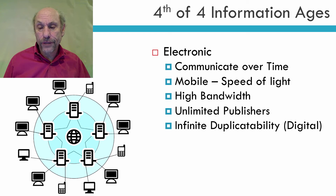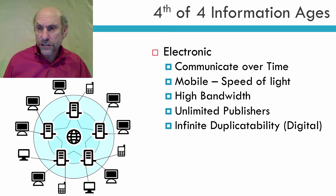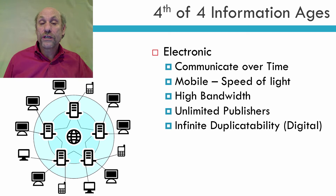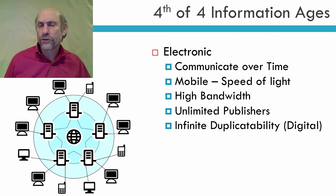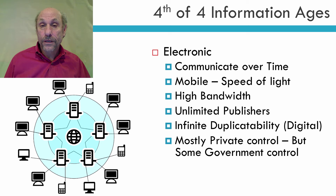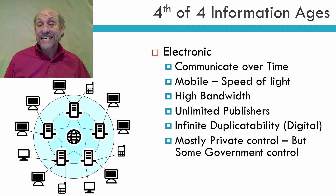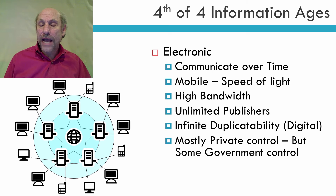An important point is that because it's digital, as opposed to analog — which all the other information ages are — you can now make perfect copies of things, bit for bit. That goes to some of the control issues around copyright. We've also changed in terms of who controls this technology. It's mostly today under private control, with still some government control. This is where topics like net neutrality and the role of government come into play, in terms of how much more or less the government needs to be involved.